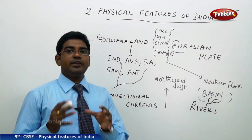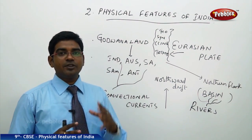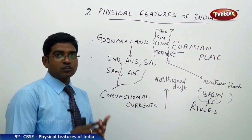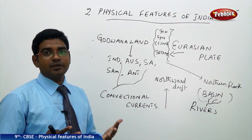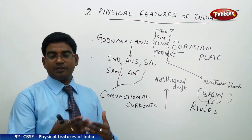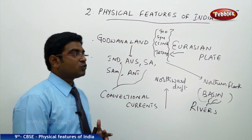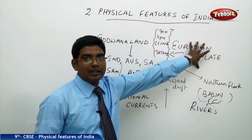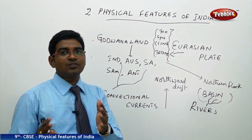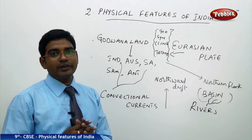Let us now see how the Himalayas, the Peninsular Plateau, and the Northern Plains have come into existence. This is according to the theory of tectonic plates, described and explained by Alfred Wegener. He explained that the seven major plates present in the entire landmass have caused the Gondwana land and the Eurasian land plates to collide with each other, resulting in the formation of the Himalayas as well as the Northern Plains. Let us look into the details now.